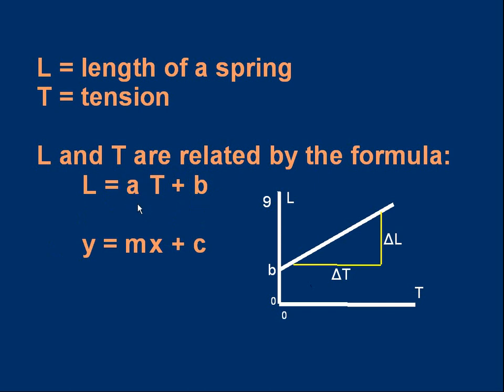a, the number we're multiplying t by, tells us something about the spring, how stiff it is. Is it easy to stretch? Is it hard to stretch? The value will relate to that. If you look at the equation, you'll see it's actually y equals mx plus c. Just use different letters. Look underneath, y corresponds to the variable l. x corresponds to the variable t. m corresponds to the constant a. And c corresponds to the constant b.